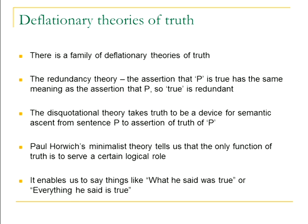The classic early 20th-century statement of a deflationary view — found in Wittgenstein, Ramsey, and Ayer — is called the redundancy theory of truth. The redundancy theory treats the truth predicate 'is true' as redundant: there is no semantic difference between saying P is true and saying P. The truth predicate adds nothing, so asserting P and asserting P is true are exactly the same thing.